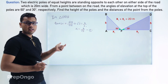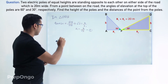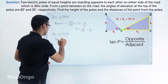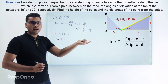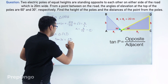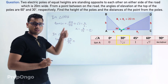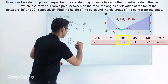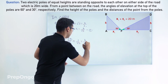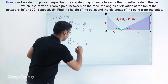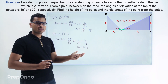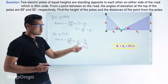Now we apply trigonometric ratios in triangle PCD. Tan of 30 degrees equals opposite upon adjacent, which is CD upon PC. From the table, tan 30 is 1 over root 3. So 1 over root 3 equals H over x2. Cross multiplying, the value of x2 comes out to be H root 3. Now we know that x1 plus x2 is 20 meters.